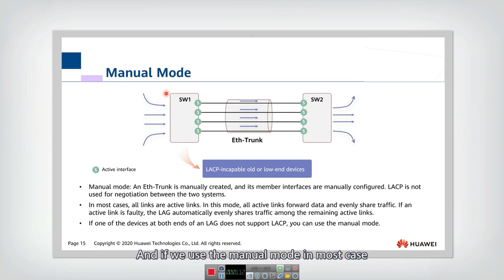And if we use the manual mode, in most cases, all the links are active links and all the active links forward data and evenly share traffic. So if we have four active links, then each of the links will transmit one quarter of the total traffic. And if one active link becomes faulty, then the LAG will automatically evenly share the traffic among the remaining active links. So if one link fails, then each of the remaining links will transmit one third of the traffic.